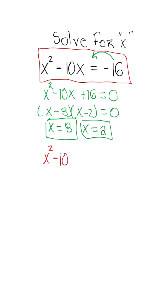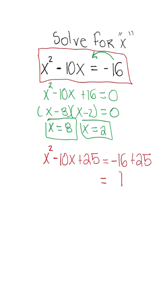So we have x squared minus 10x plus 25 is equal to negative 16 plus 25. We have to balance the equation and add that term on both sides. The right side simplifies to 9, and the left side we're going to break it down to its binomial, which will be x minus 5 squared.